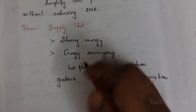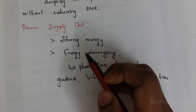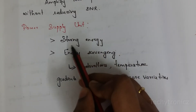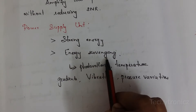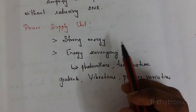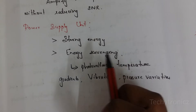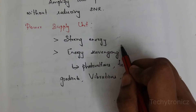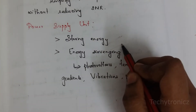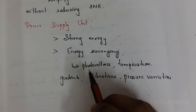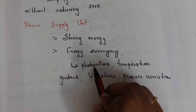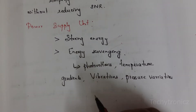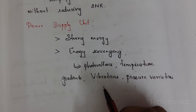The next component is the power supply unit. It has two aspects: storing energy and energy scavenging. For storing energy, batteries are used, which may be non-rechargeable or rechargeable. Battery requirements include capacity under load, low self-discharge, and efficient recharging.